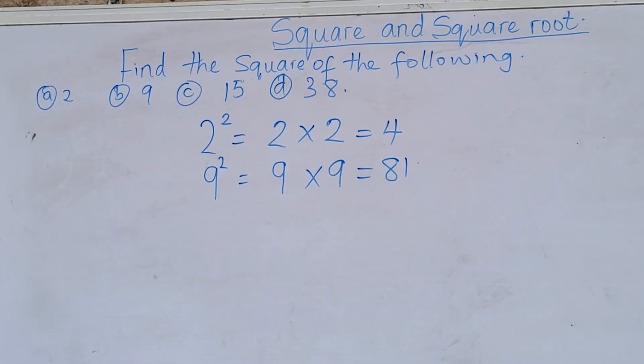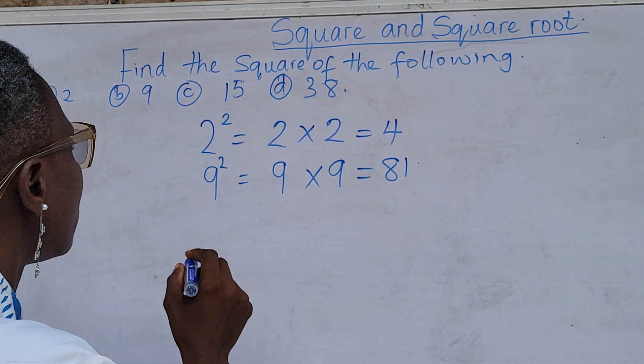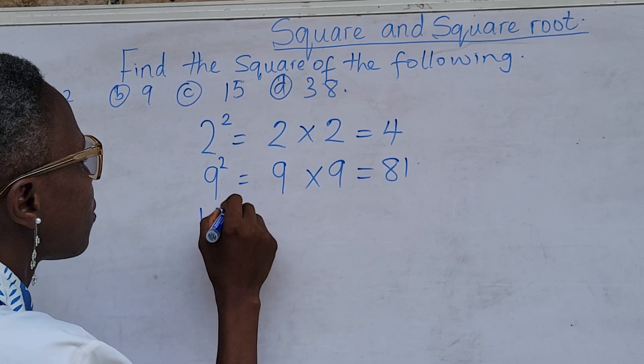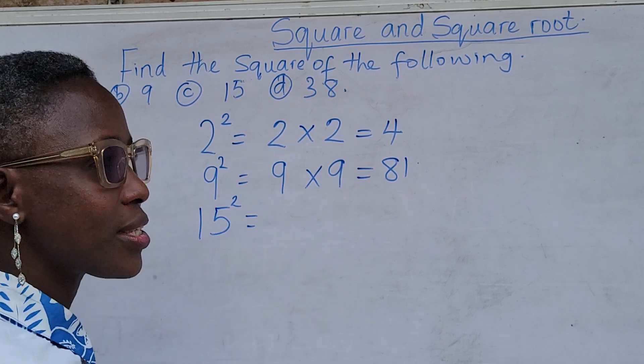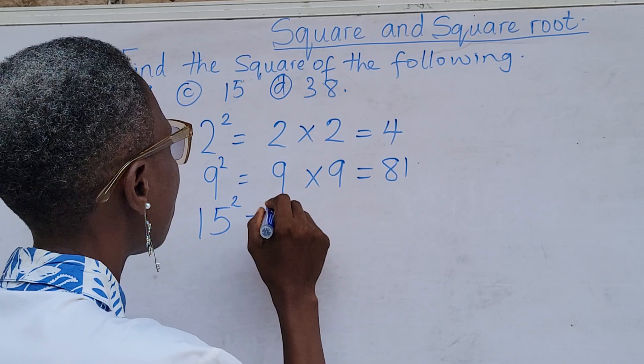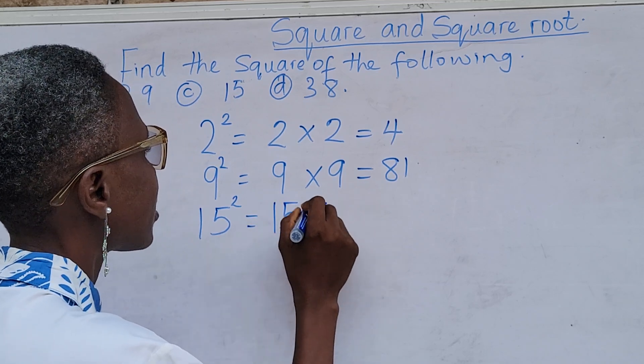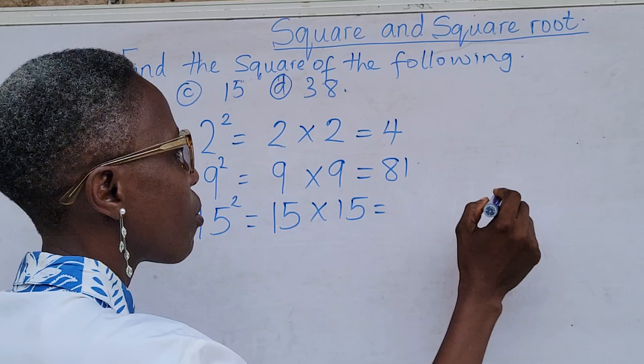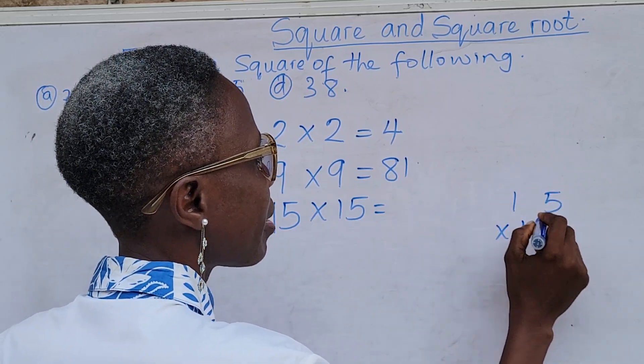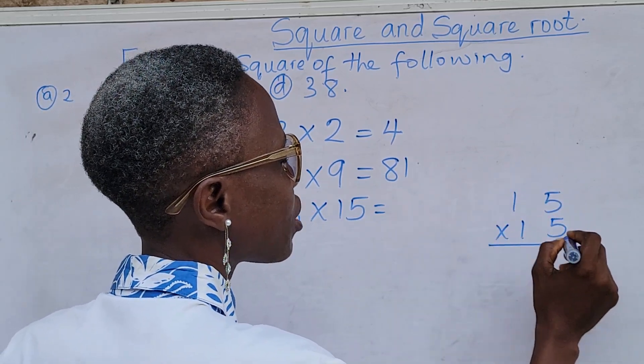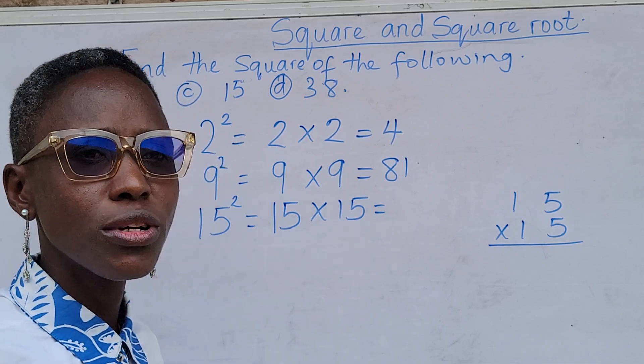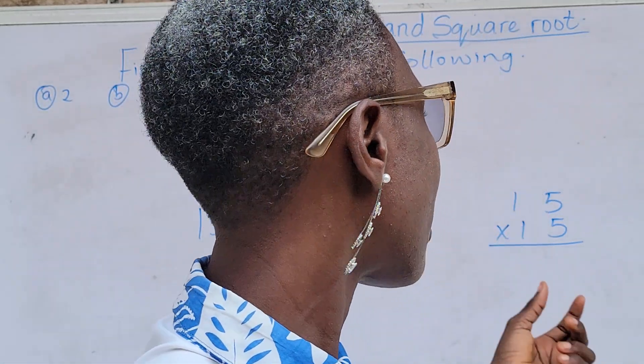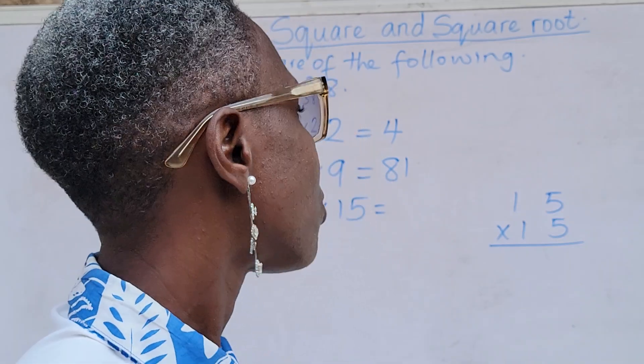And then we have 15. Square of 15 means 15 by 15, which means 15 times 15. Yes, you can do a small working by the side. Remember, you can watch my video on the multiplication of 2 digits by 2 digits. That will help you to understand what I am about to do here. So let's start.